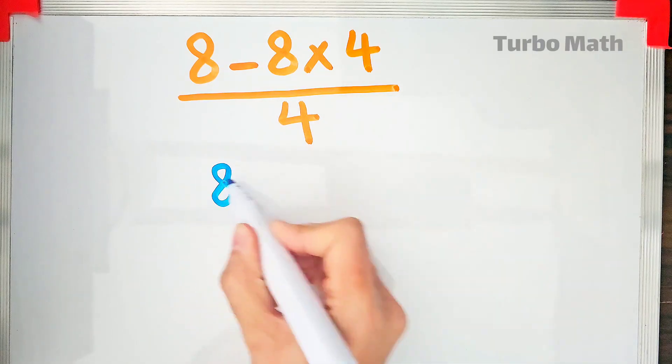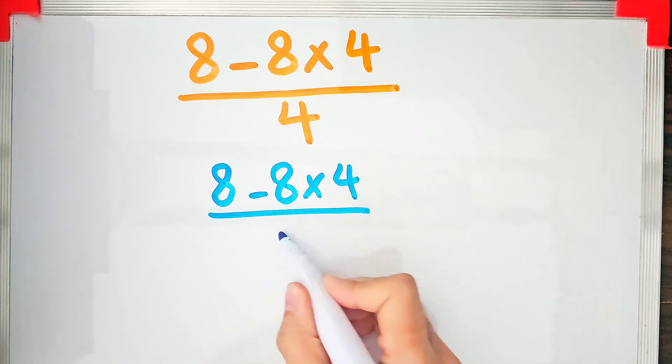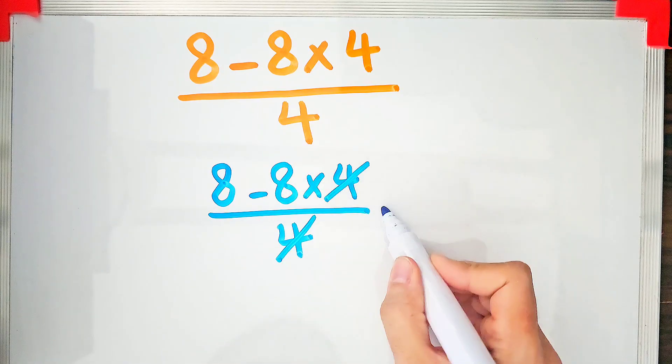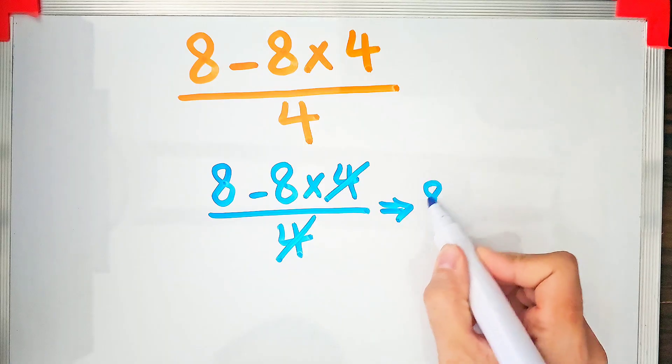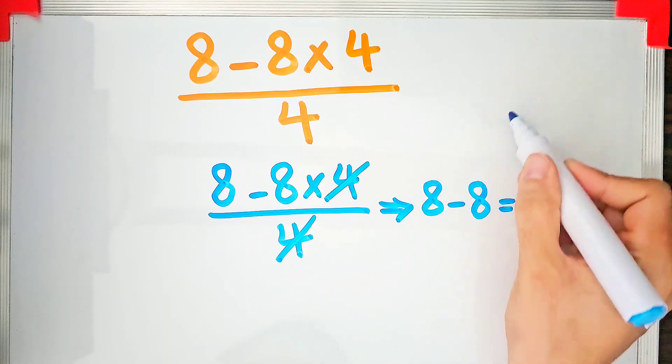To solve this question, some people start from the left and simplify. They don't pay attention to the priority of the mathematical operations. As you can see in the image, they simplify the question and get the final answer, but it's definitely wrong.